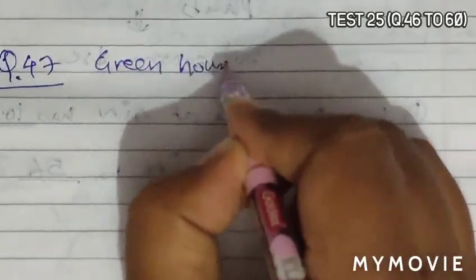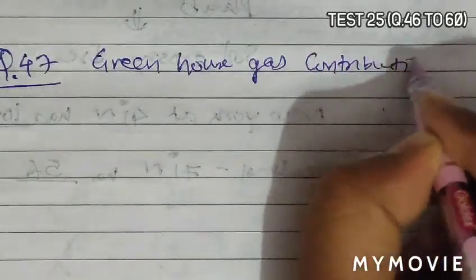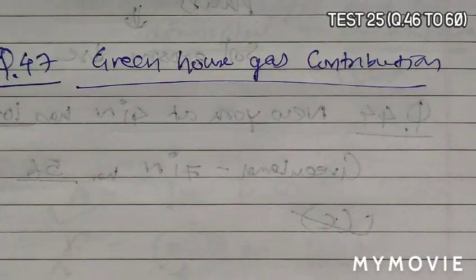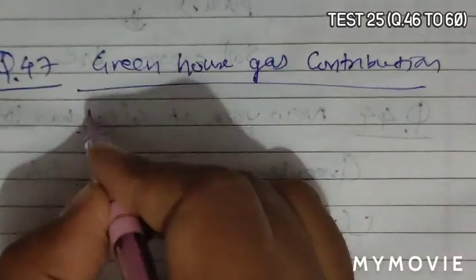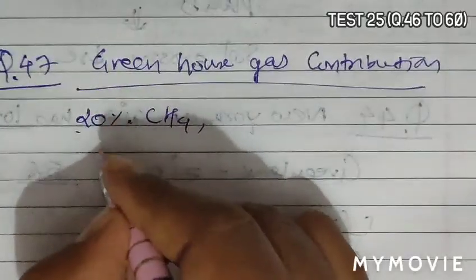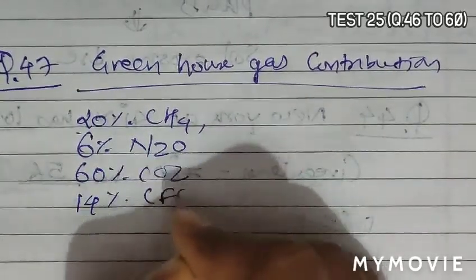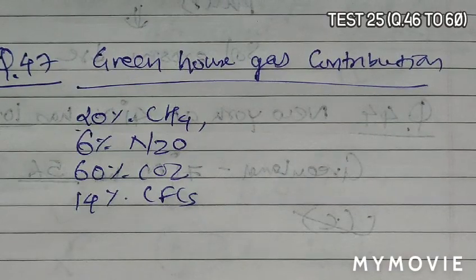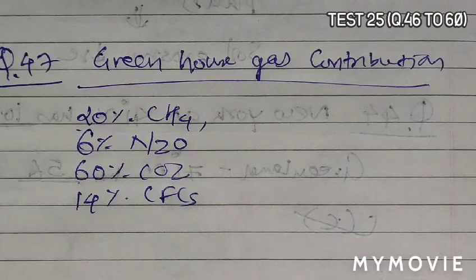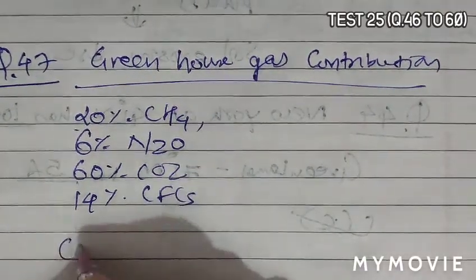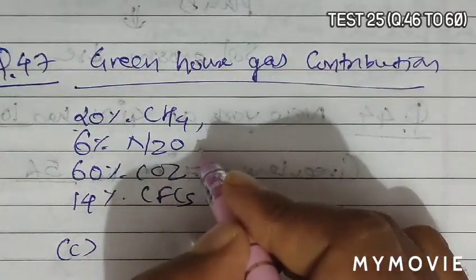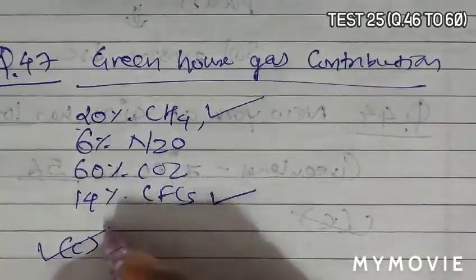Question 47 asks which one of the following is the correct percentage of two out of total four greenhouse gases that contribute to the total global warming. Greenhouse gas contribution is something like 20% of methane, 6% of N2O, 60% of CO2 and 14% of CFCs. In option C they have given CFC as 14% and methane as 20%, so C becomes the correct answer.